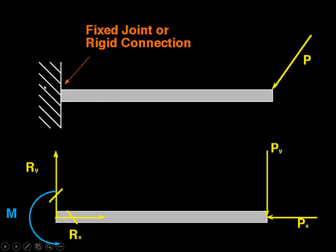The second diagram is more explicit: somehow that connection can supply a vertical force Ry, a horizontal force Rx, and a moment M. We've also broken down the applied force P into components Py and Px.